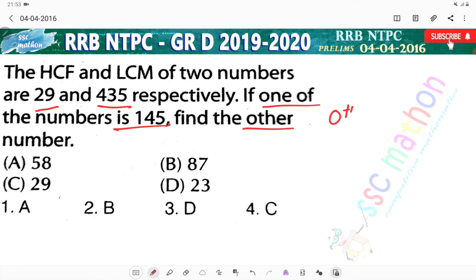What will the other number be? The other number will be equal to... HCF into LCM divided by the given number. Working through: 5 into 12, 5 into 9 is 45, 5 into 8 is 40, 5 into 7 is 25. 29 cut... 87 is the correct answer, option number B.